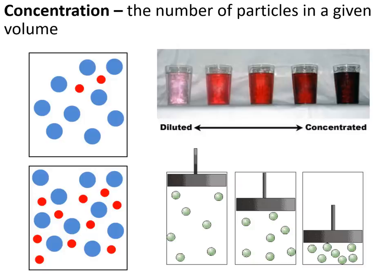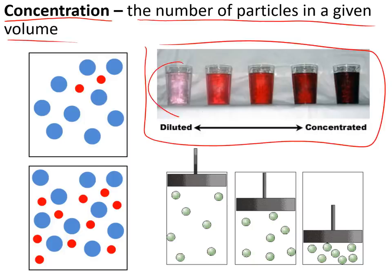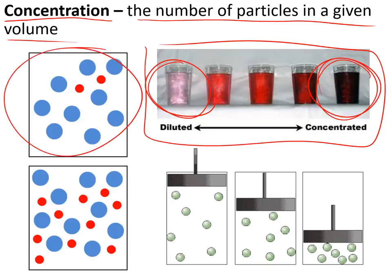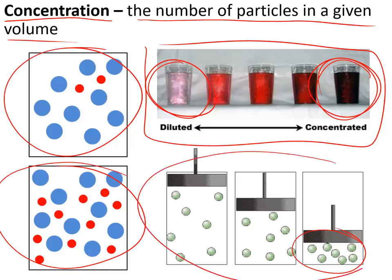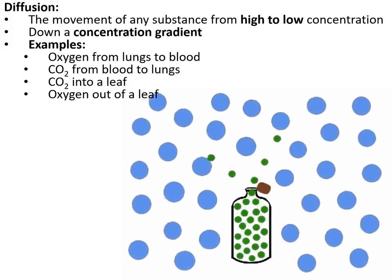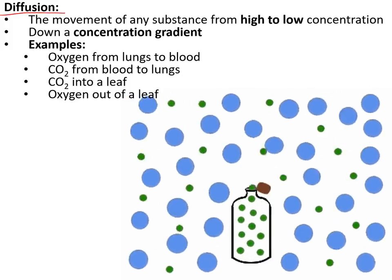To understand how things enter and leave cells we need to understand concentration, which is the number of particles in a given volume. A low concentration has fewer particles; a high concentration has more particles in the same volume. The concentration of red is lower than blue where there are fewer reds. Where the number of reds and blues is equal, concentration is equal. The concentration is highest when particles are in the smallest volume.